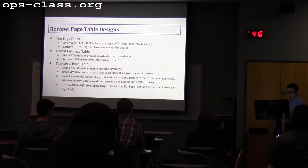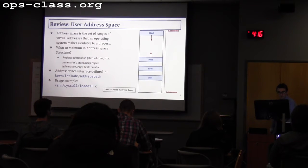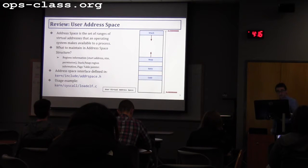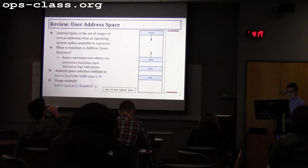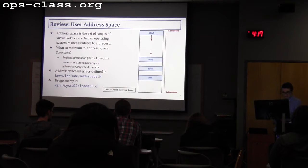The retrieval time for the two-level page table is constant time. Space usage is better than a flat page table and worse than a linked list. We also presented the address space, which is a collection of virtual addresses the OS makes available to a user process. The address space structure should maintain region information: start address, size, permissions, stack and heap information, and a page table pointer. Implement all interfaces defined in address_space.h; usage examples can be found in loadelf.